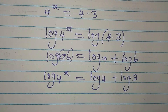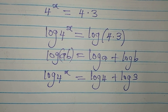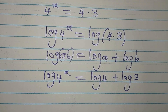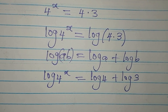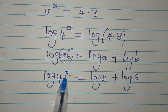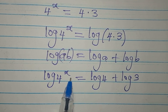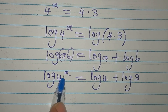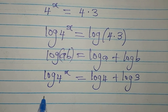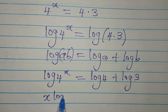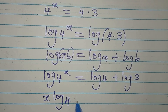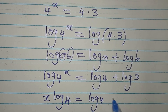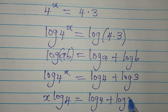Now we need to eliminate the exponent x. Since x is the power, it has to come down in front — that's the power law of logarithms. So we now have x times log 4 equals log 4 plus log 3.